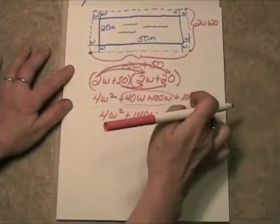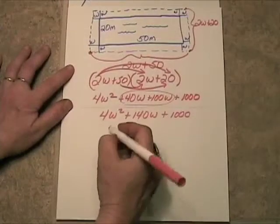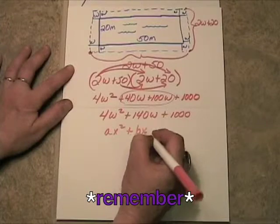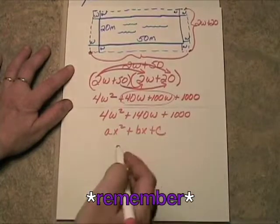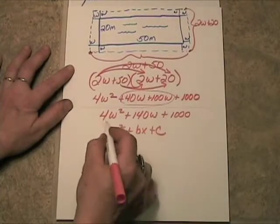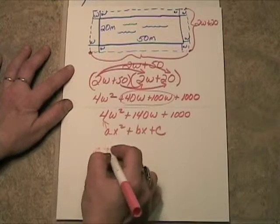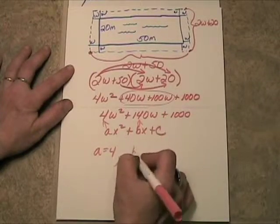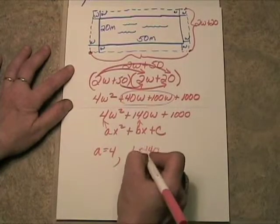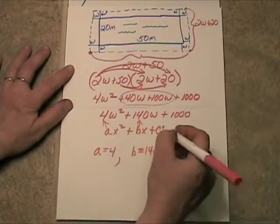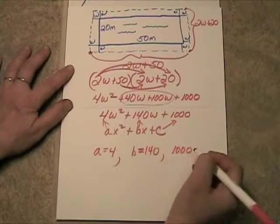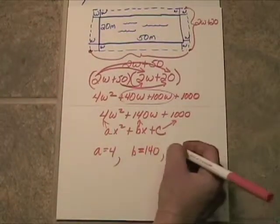And that is standard form. Remember, standard form is ax squared plus bx plus c. And in this case, the a is equal to 4. The b is equal to 140. And the c, the constant term, is just simply 1,000. That is your c.